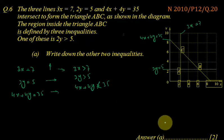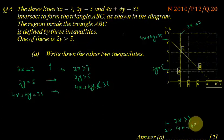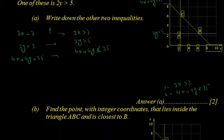So the missing two inequalities: one is 3x greater than 7 and the number two is 4x plus 4y less than 35. And part b.